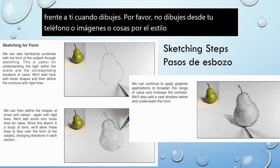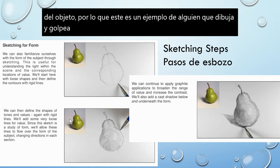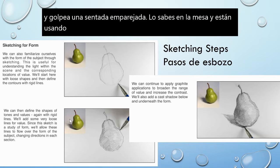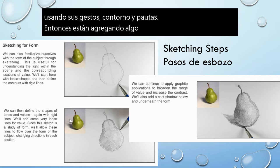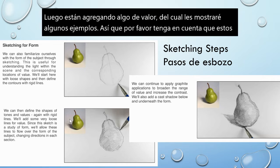This is an example of someone drawing from a pear that's sitting at the table, and they're using their gestures, contour, and guidelines. Then they're adding some value, which I'm going to show you some examples of. Please keep in mind that these are in the OneNote if you need to see examples.